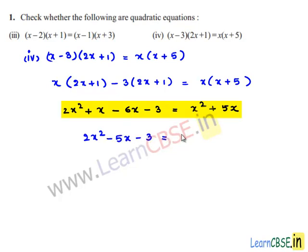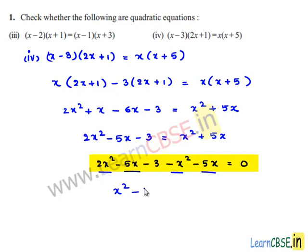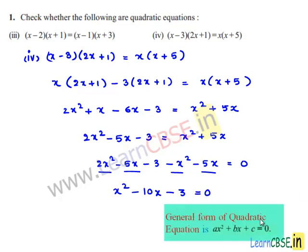This equals x squared plus 5x on the right hand side. Combining: 2x squared minus 5x minus 3 equals x squared plus 5x. Transposing right hand side terms gives minus x squared minus 5x equals 0, so 2x squared minus x squared is x squared, minus 5x minus 5x is minus 10x, minus 3. The final equation is x squared minus 10x minus 3 equals 0, which resembles the general form, so the given equation is a quadratic equation.